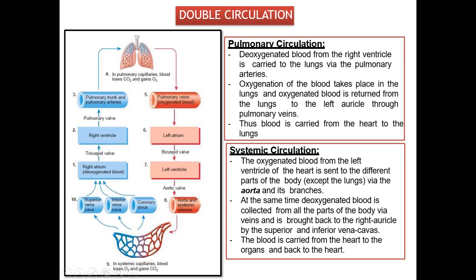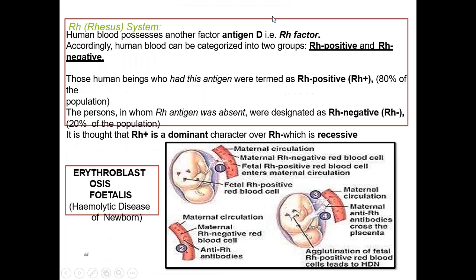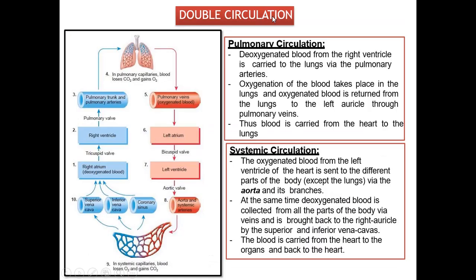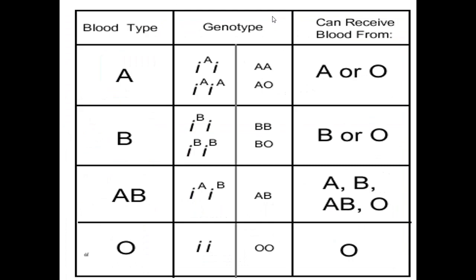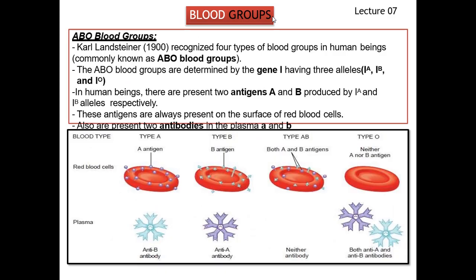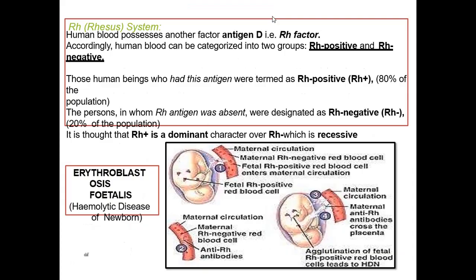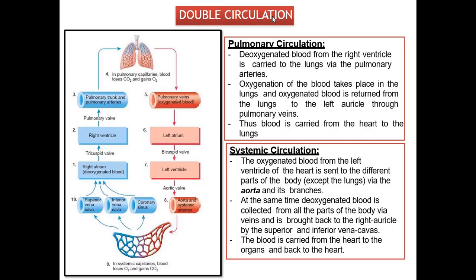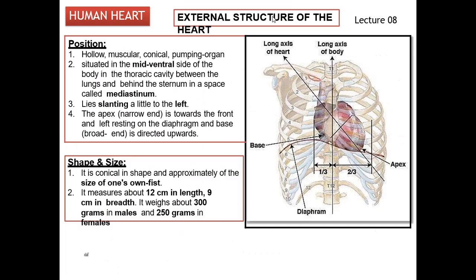In the last lecture, what we completed was about double circulation — that is lecture number 7. We completed double circulation and blood group types from lecture number 7. From lecture number 8, we will start with the external structure of the heart.